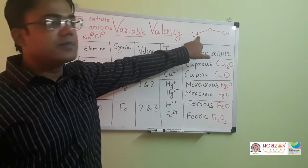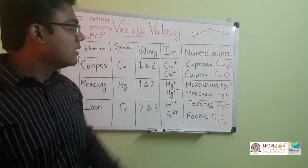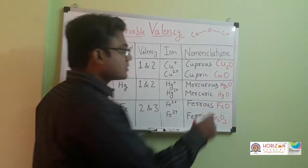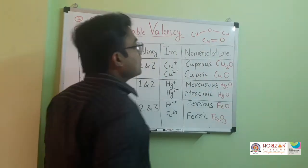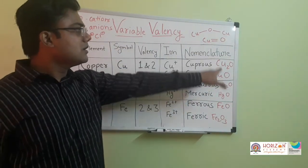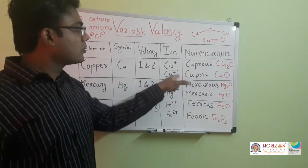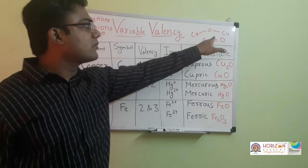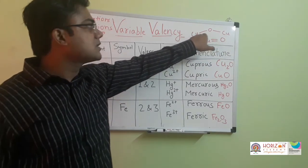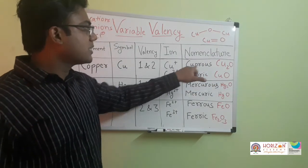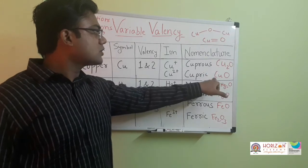In Cu2O, each copper has a plus one charge, so this is cuprous oxide. In cupric oxide, CuO, single copper is forming two bonds with oxygen because copper has lost two electrons. So in cuprous oxide Cu2O single bonds are formed, and in cupric oxide CuO two bonds are formed.